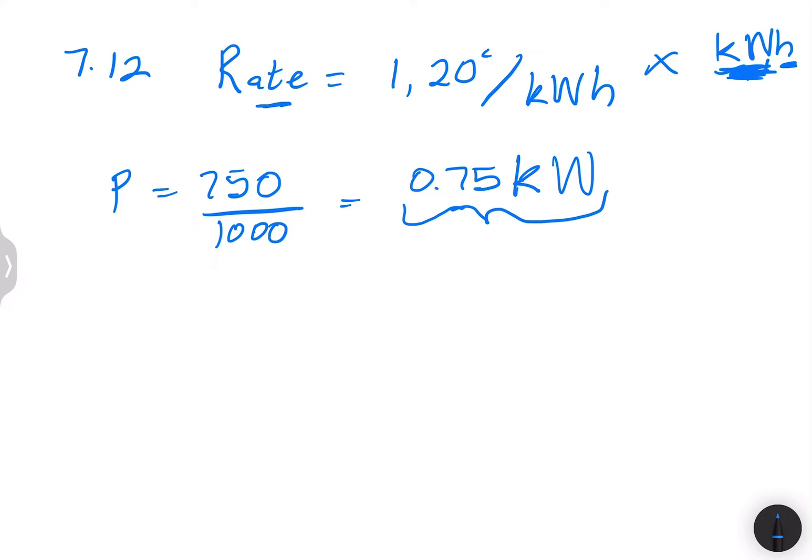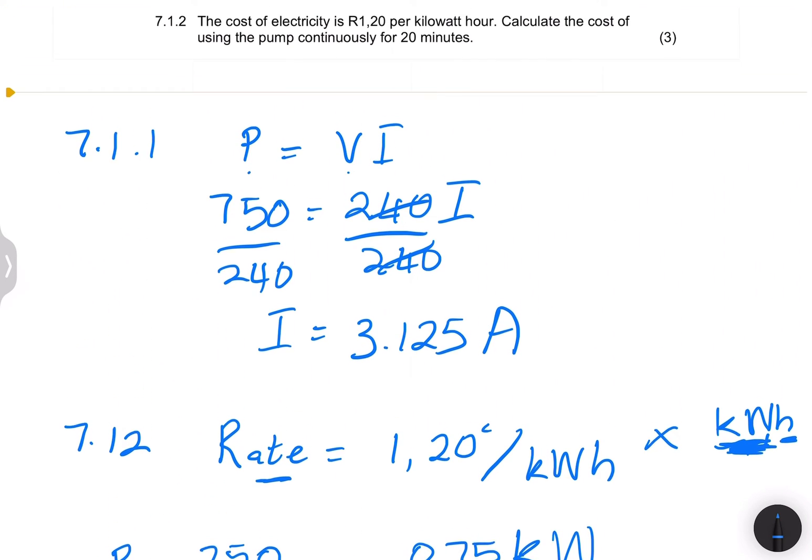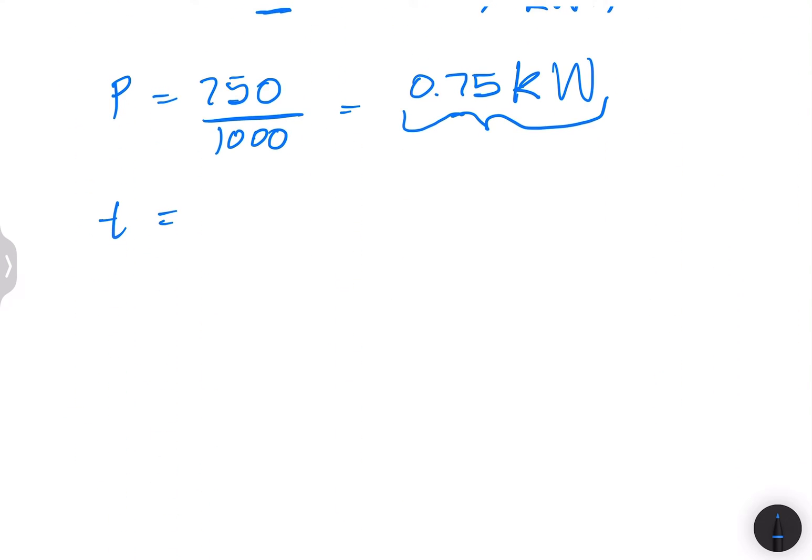And now what am I left with? The time. So time must be expressed in hours. So remember they're giving us 20 minutes. So in this case, think about it. So 60 minutes is one hour. So in this case, what do you do to convert it to hours? So 60 divided by 60 will equal to one. So it means every time I want to convert time from minutes to hours, I need to divide by 60.